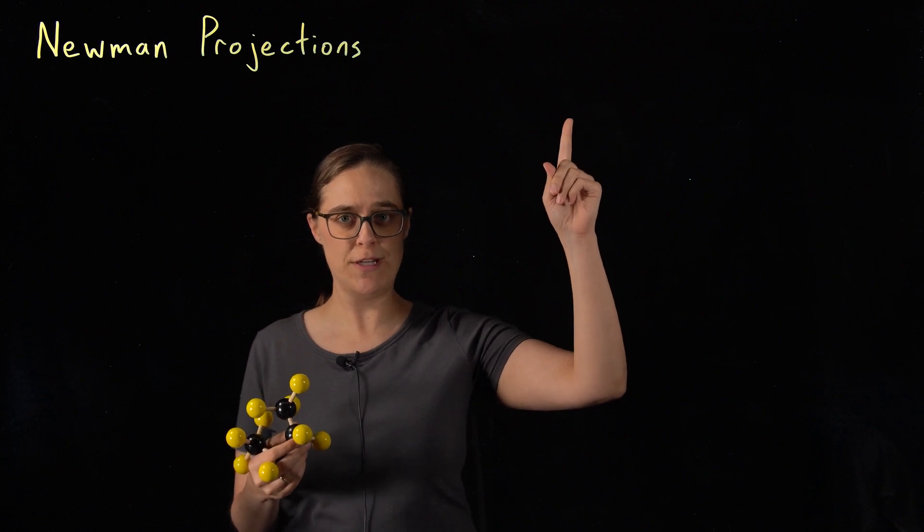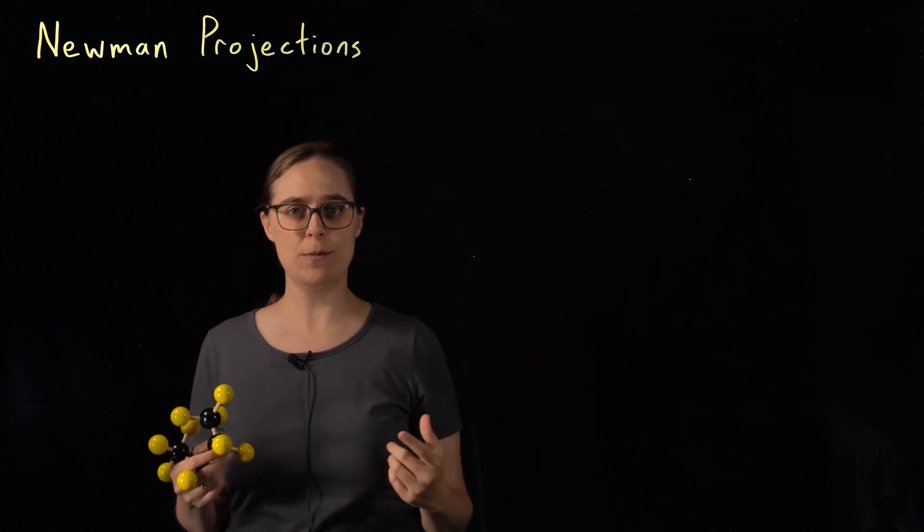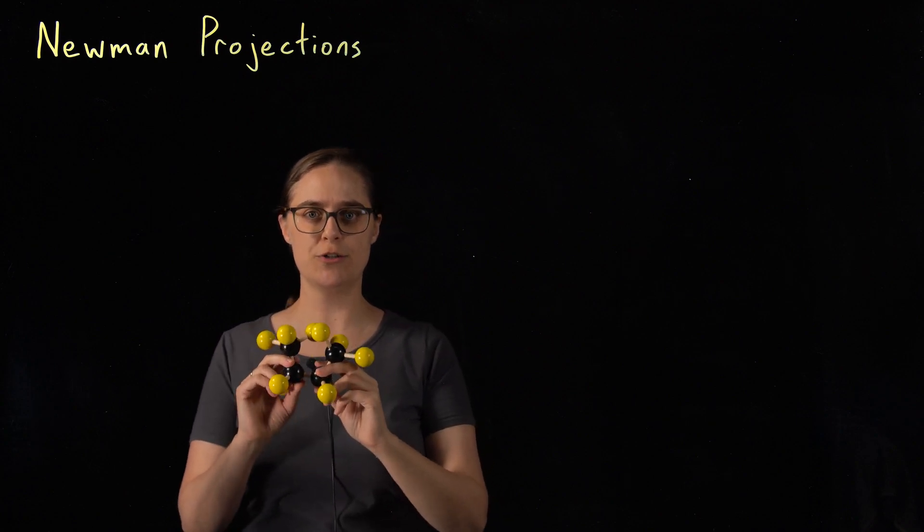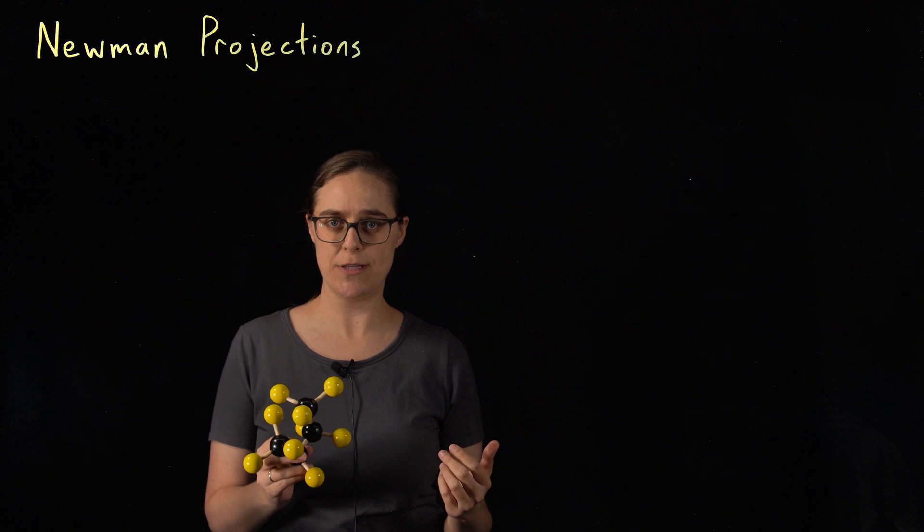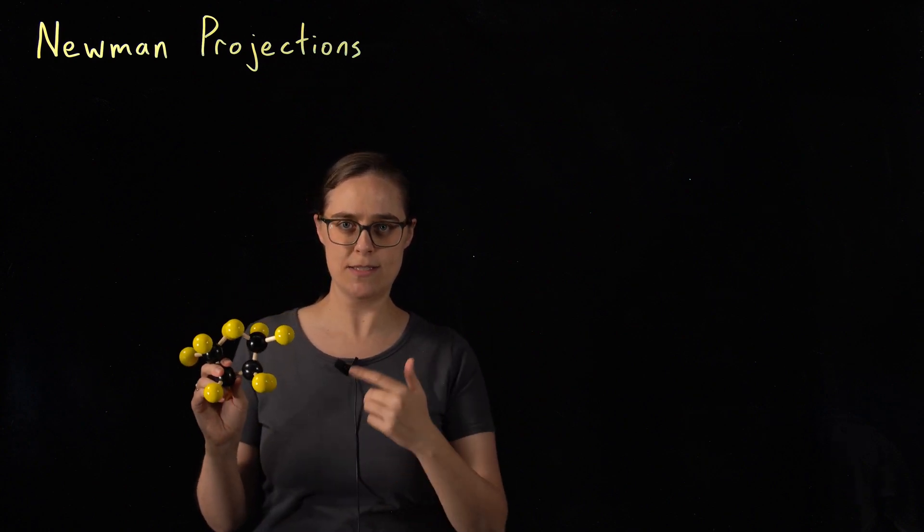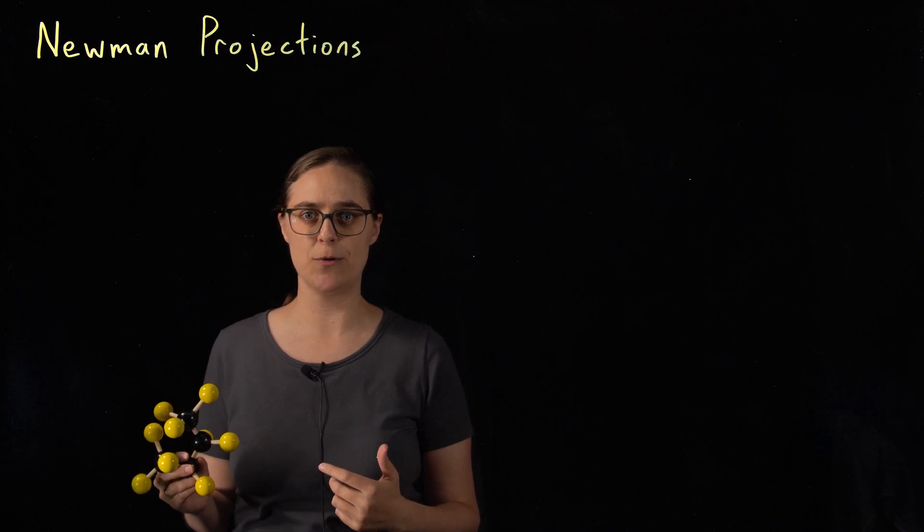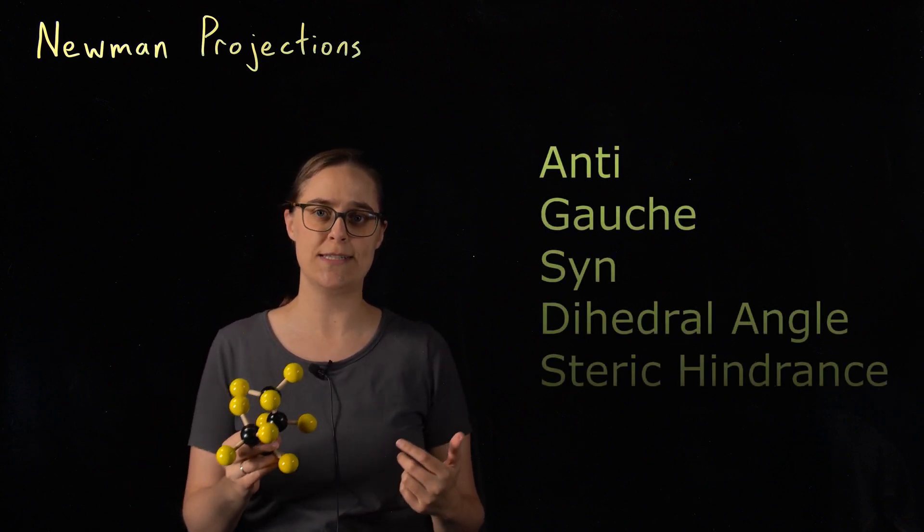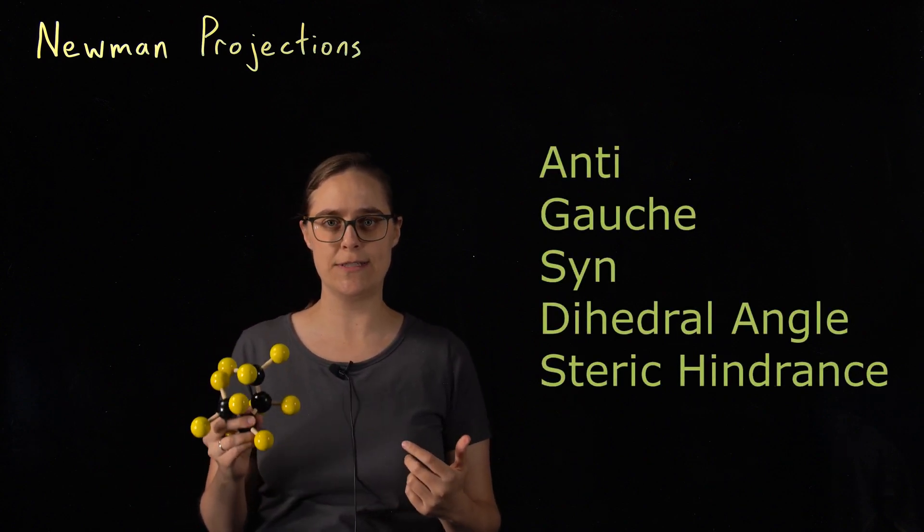I already have a Newman projection video about ethane just to give you the basics of how to draw a Newman projection, but now I have a larger, more complicated molecule. You are going to see a different potential energy diagram, and this molecule is going to give me the opportunity to introduce some new terminology to you, like anti, gauche, syn, dihedral angle, steric hindrance, and so on.